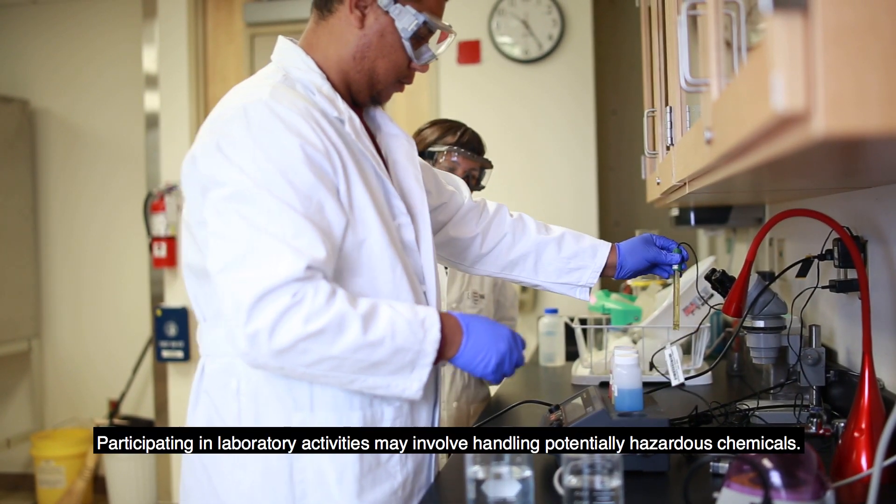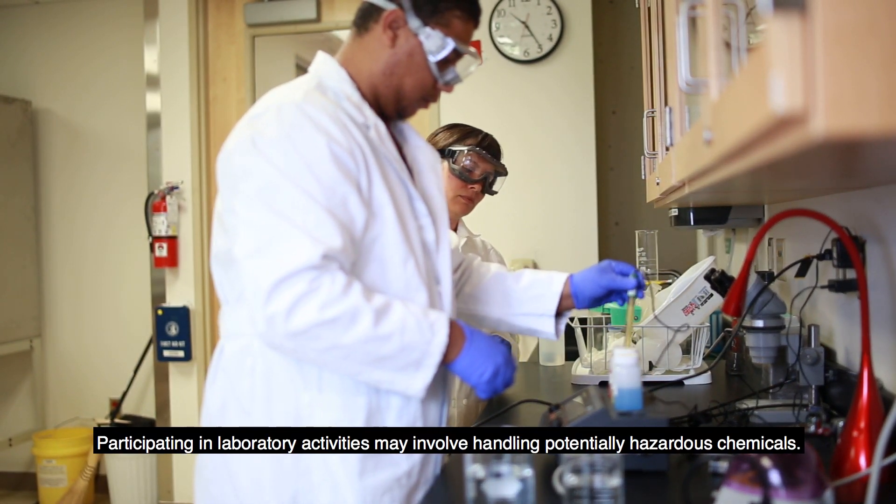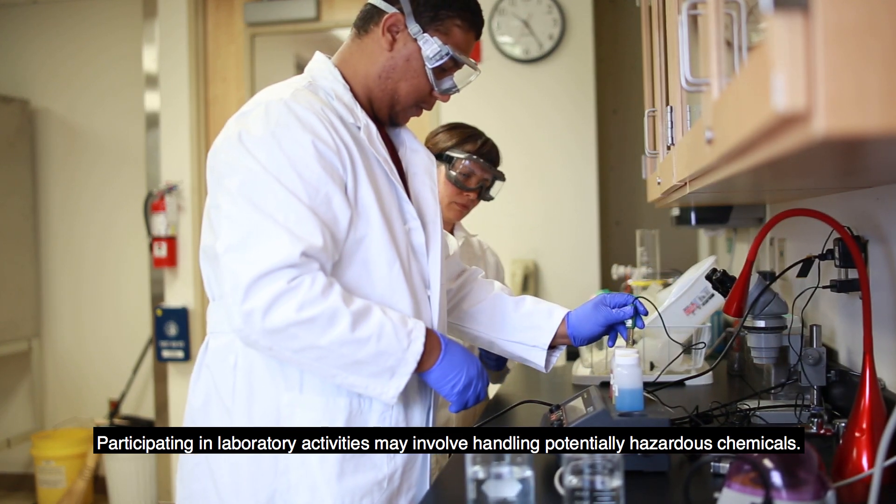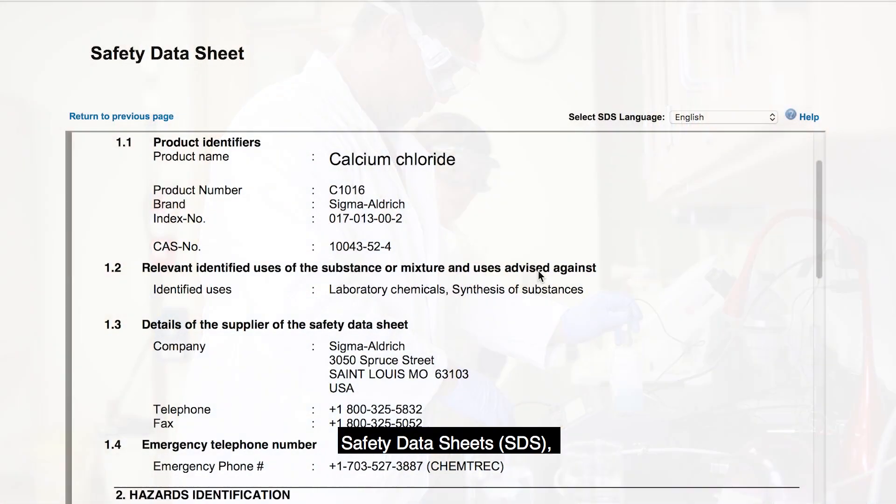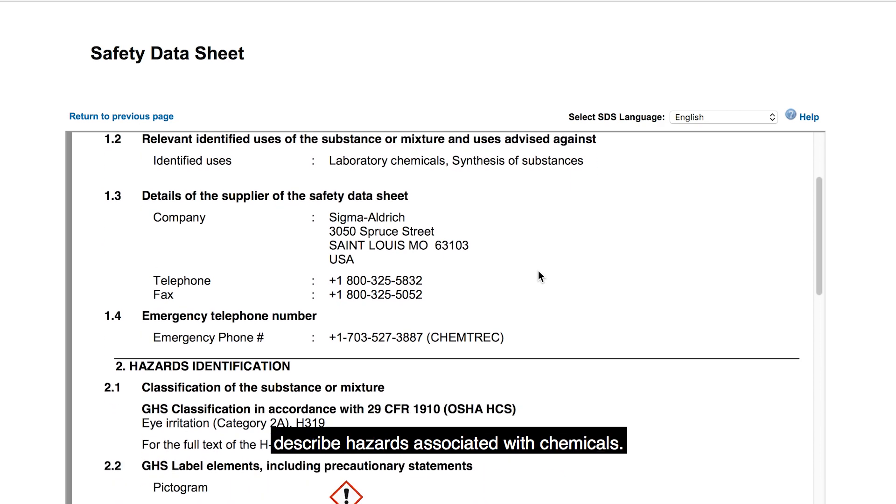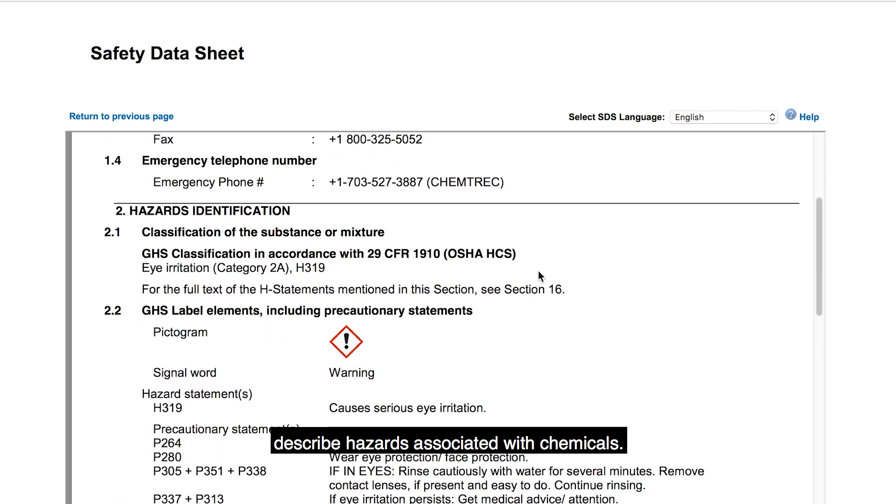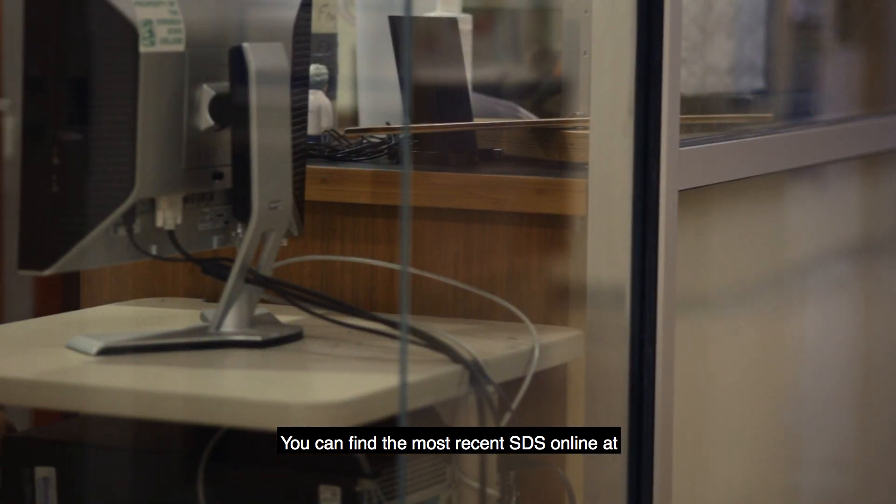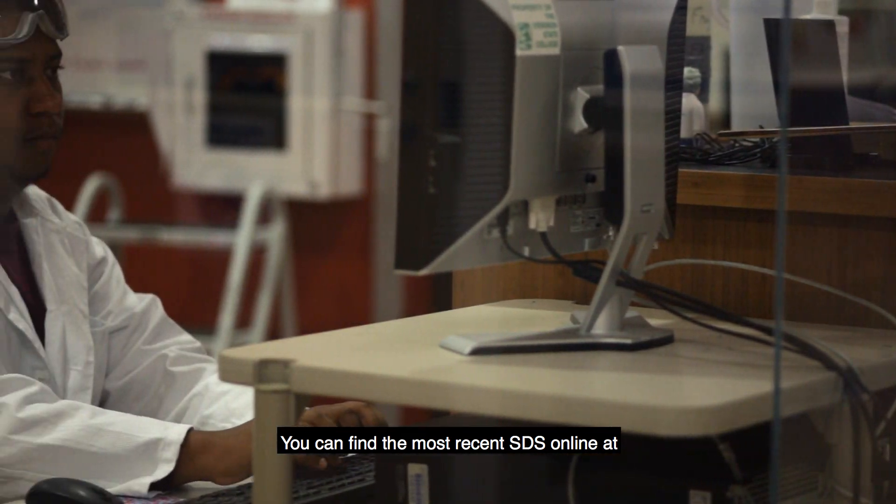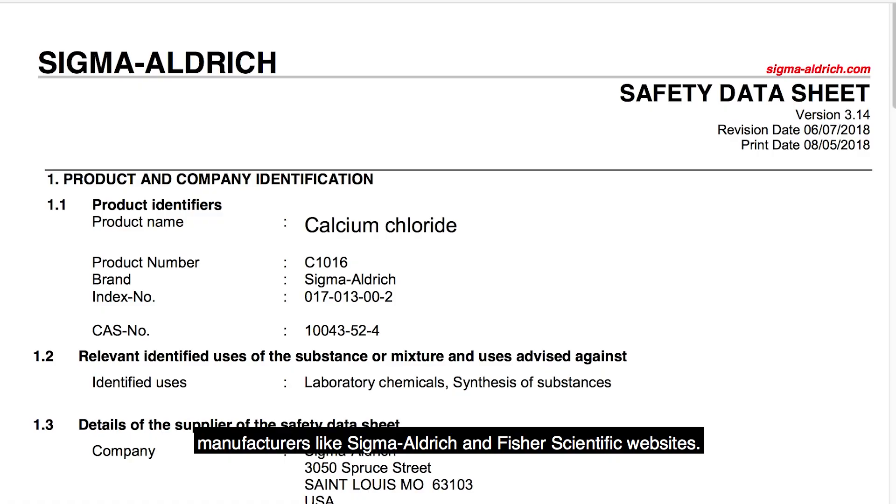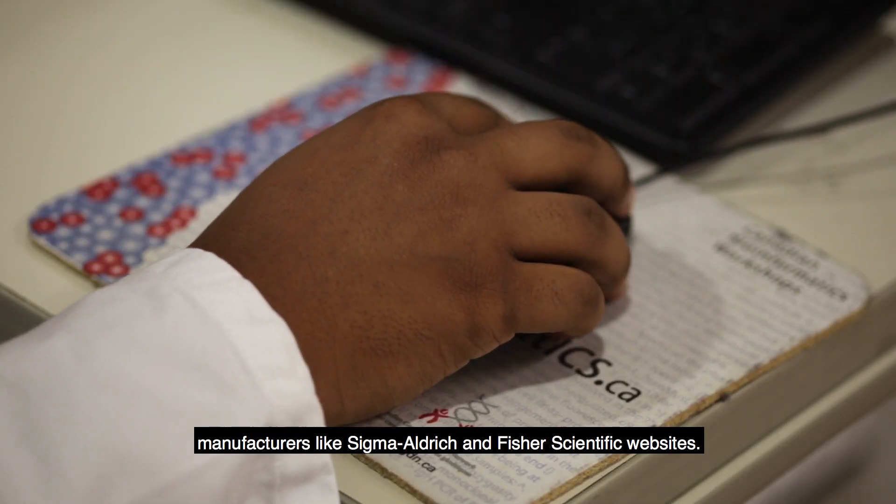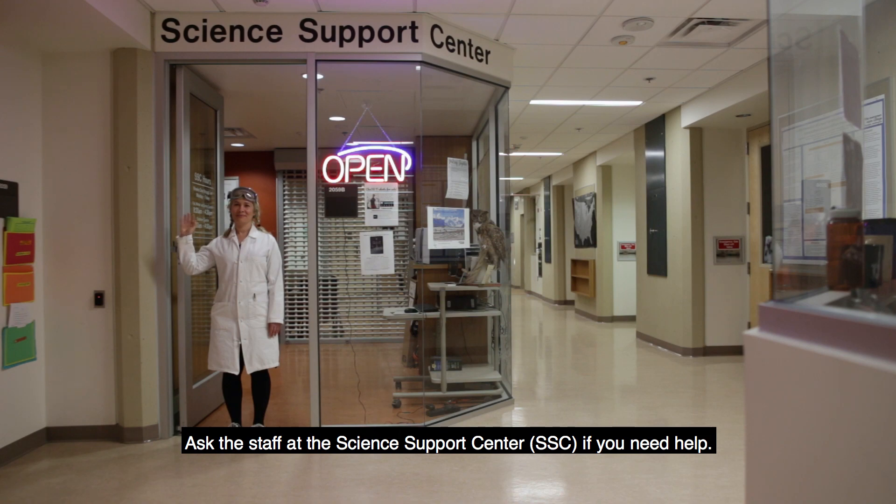Participating in laboratory activities may involve handling potentially hazardous chemicals. Safety data sheets describe hazards associated with chemicals. You can find the most recent SDS online at manufacturers like Sigma, Aldrich, and Fisher's scientific websites. Ask the staff at the Science Support Center if you need help.